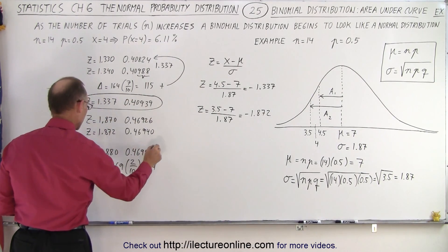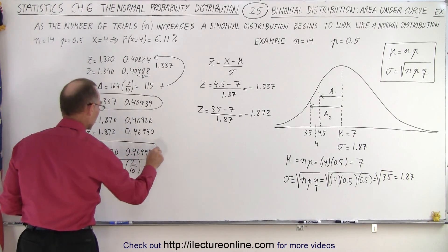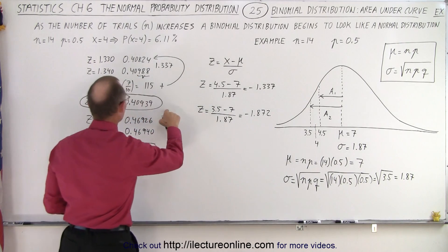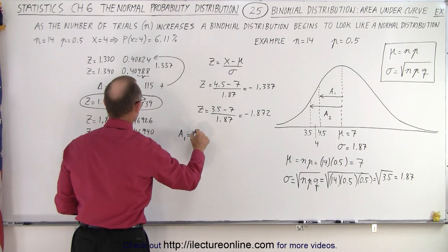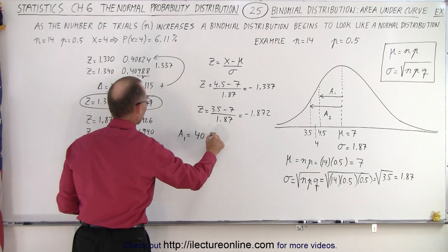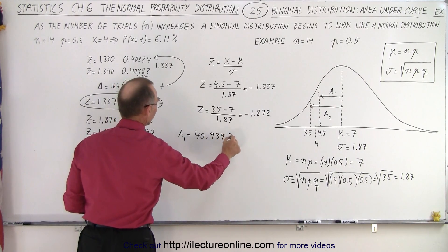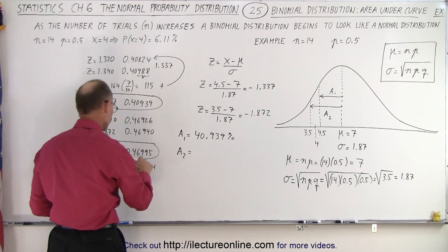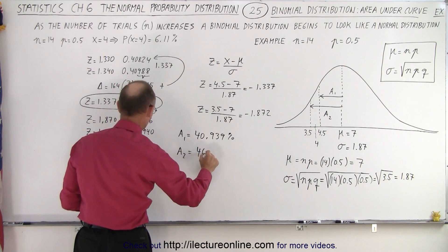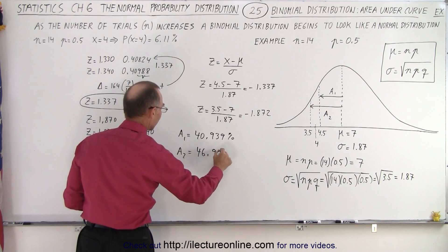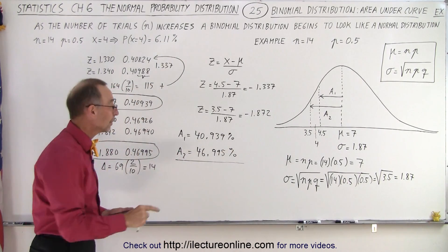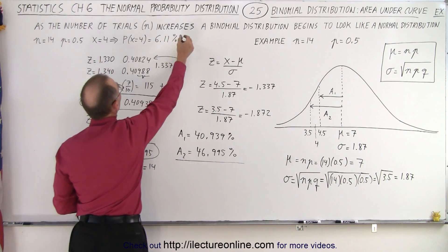All right, so now I have the two z values right here and right here which gives me those two areas. So this is for A1, so that means that A1 is equal to 40.939% of the total area, and for A2 that is equal to 46.995% of the total area. Now if I take the difference between them, that difference should be the same result that I got on the previous video when I used the binomial expansion method.